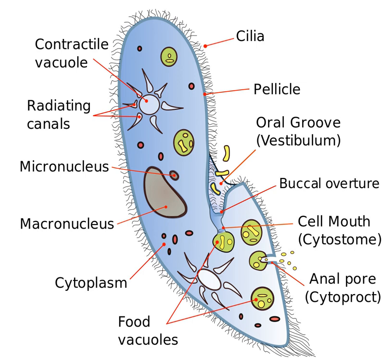Location. The location of the cytostome in most flagellated protozoa is strongly conserved. The cytostome is located on the anterior end of the cell close to a structure known as the flagellar pocket, which is also an invagination in the cell and serves as a site of endocytosis. The opening of the cytostome is approximately level with the opening of the flagellar pocket.